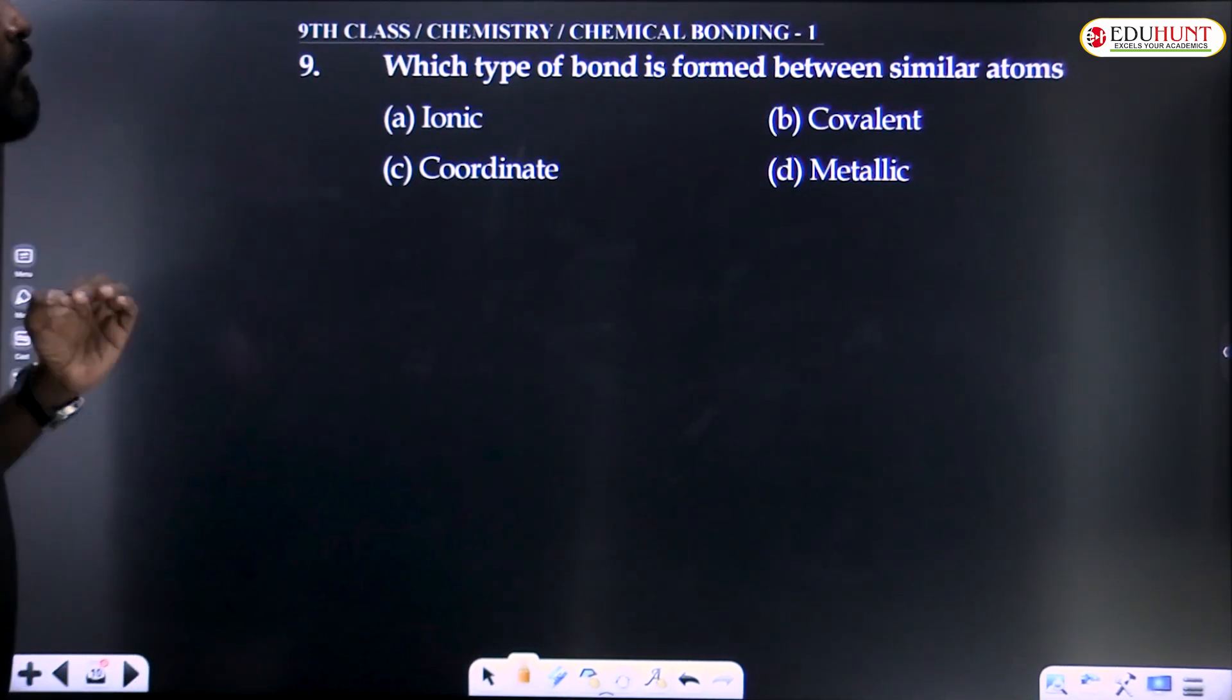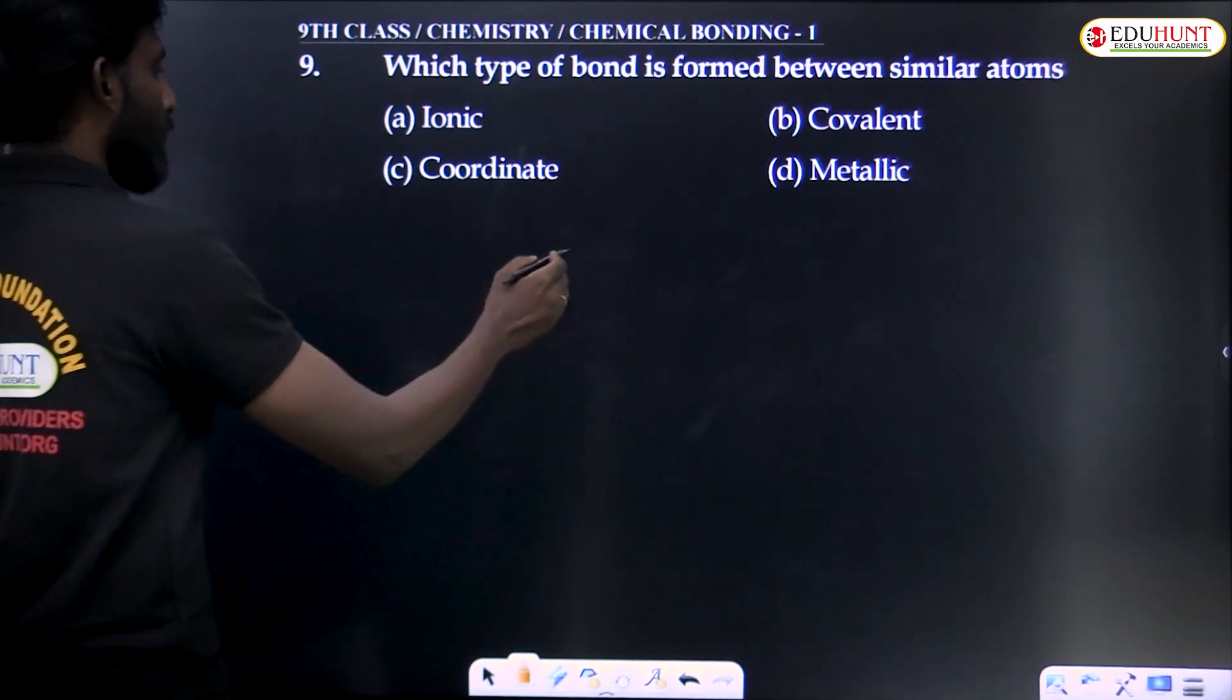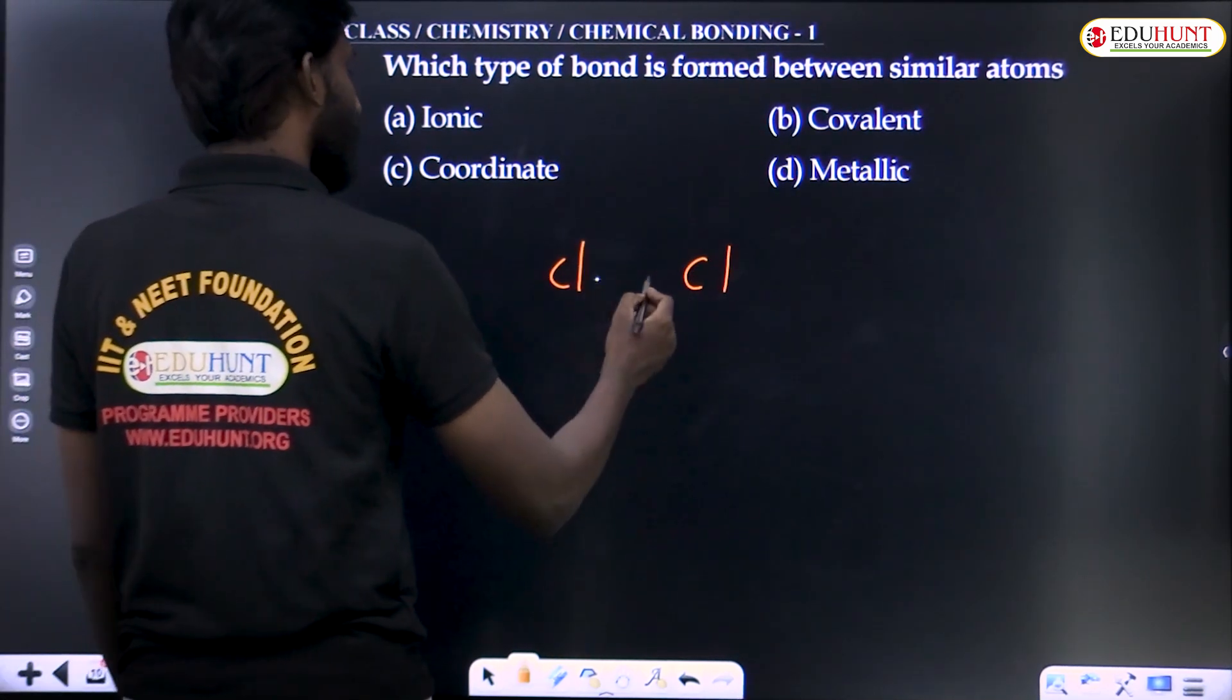Electronegativity difference more than 1.7 means very high, ionic bond. Less than 1.7, covalent. So for formation of covalent bond, electronegativity difference should be less than 1.7. Which type of bond is formed between similar atoms? Chlorine, chlorine - covalent bond.